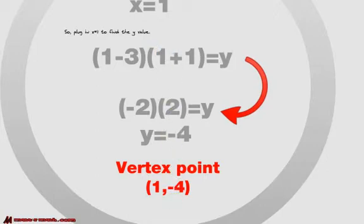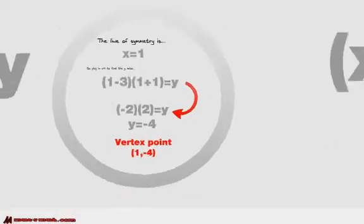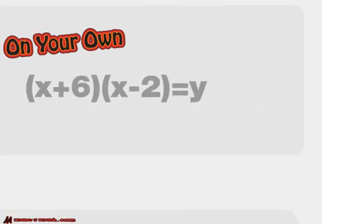We're putting all these pieces together for the puzzle to draw our trinomial. Why don't you try and find the vertex of x plus 6 times the quantity of x minus 2? Remember, find the line of symmetry first, and then from the line of symmetry, plug it back in — and that gives you the vertex.